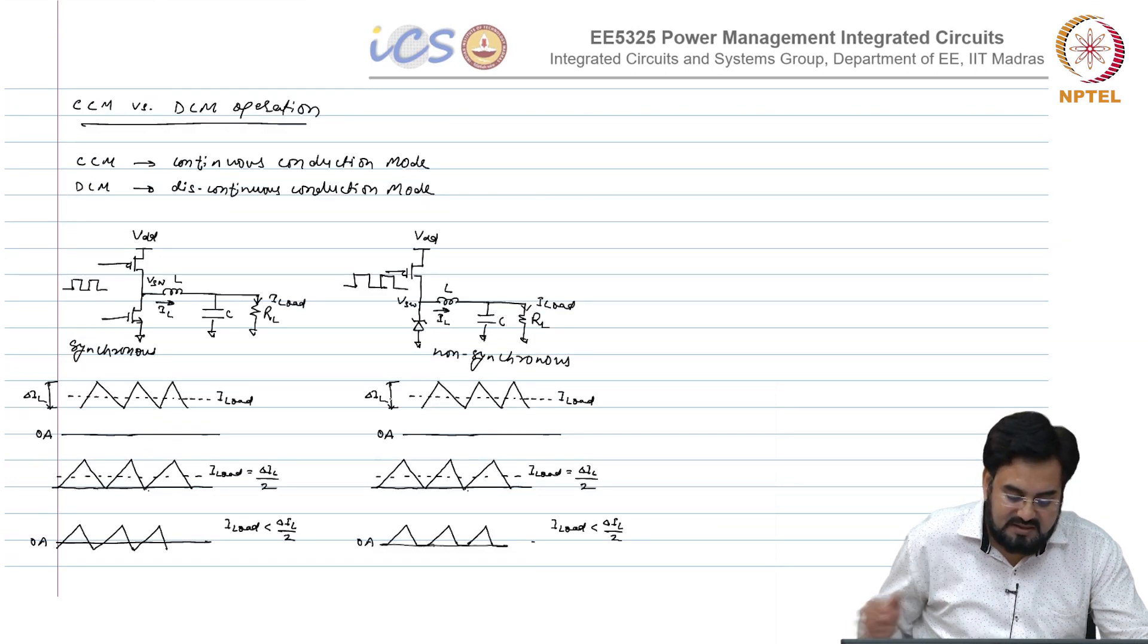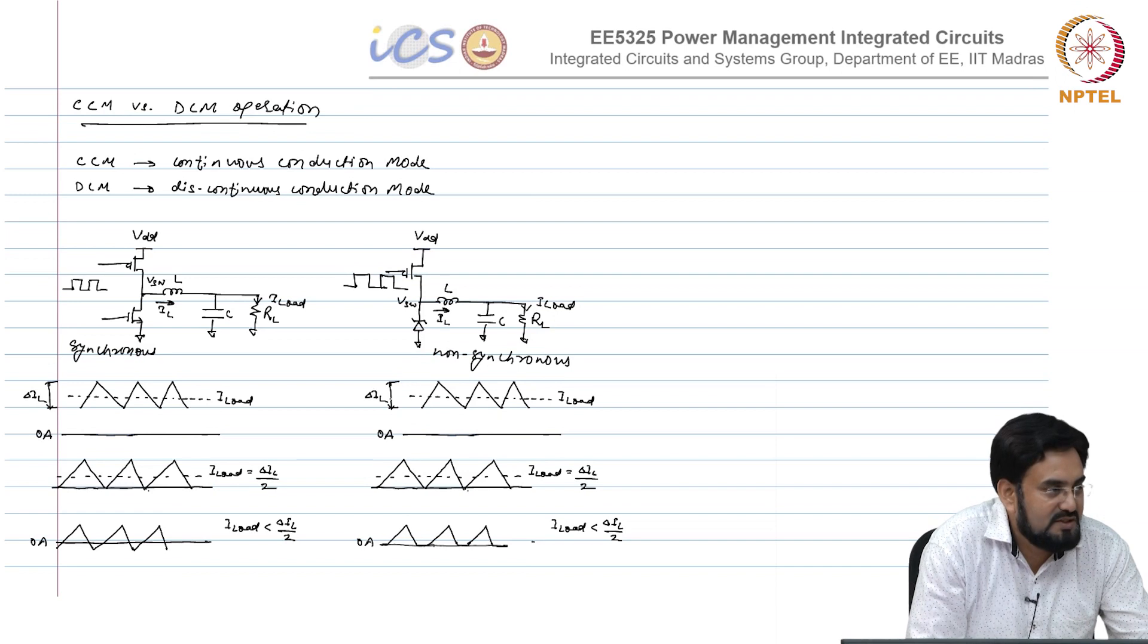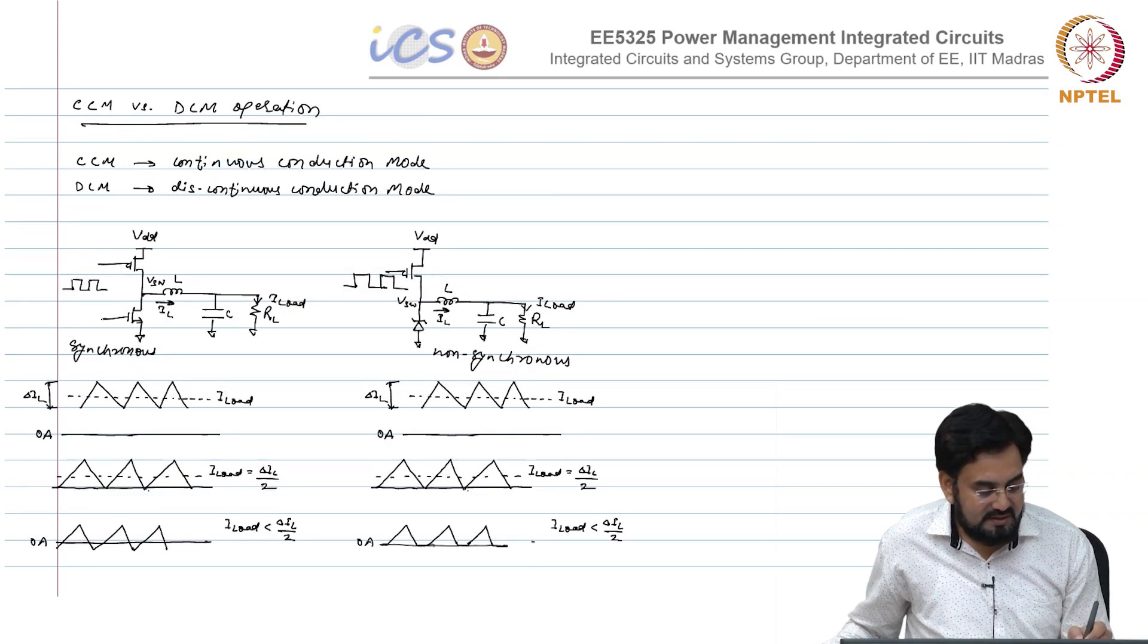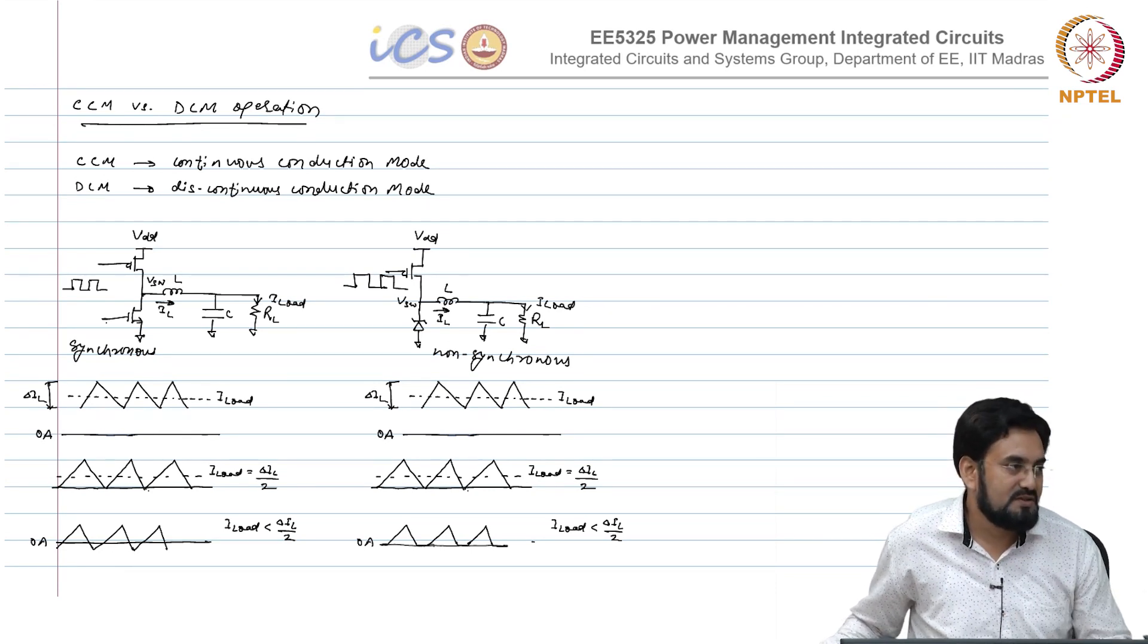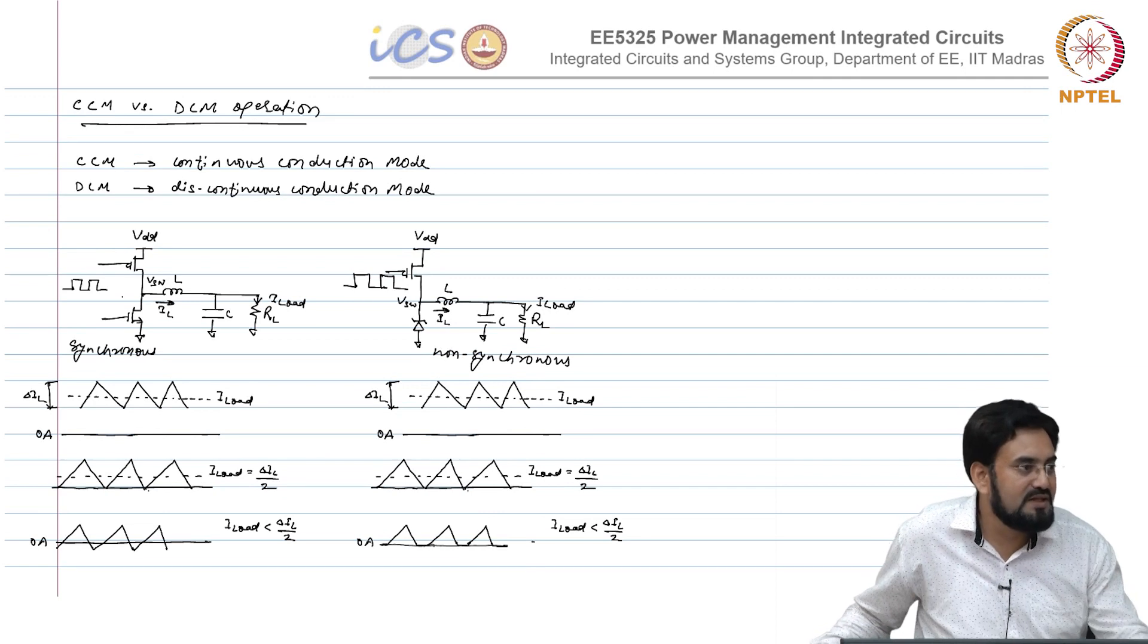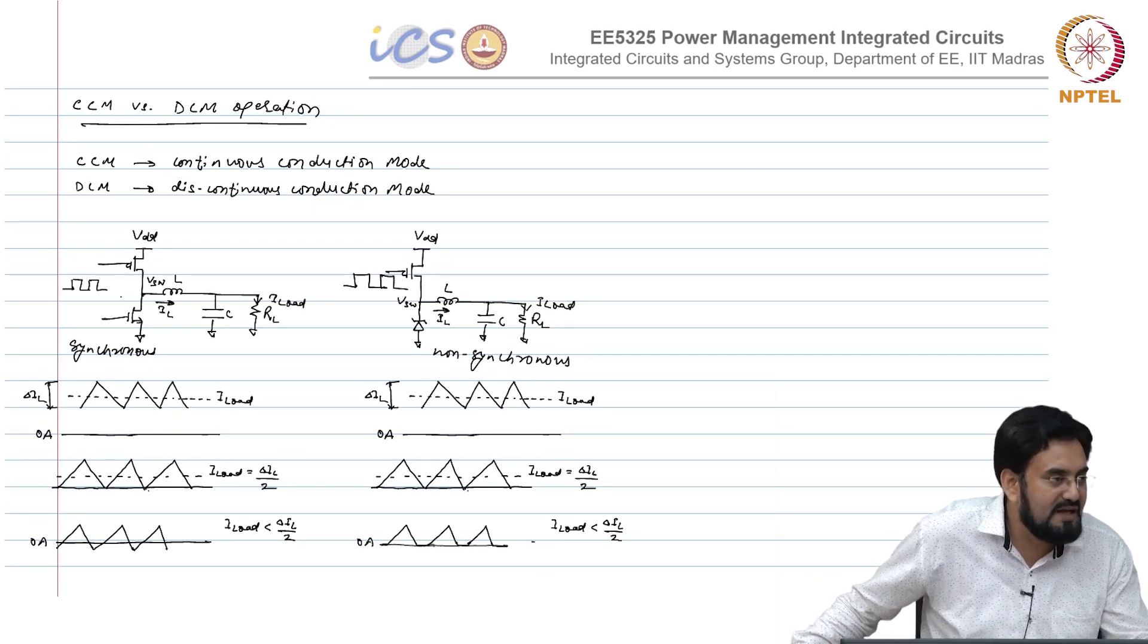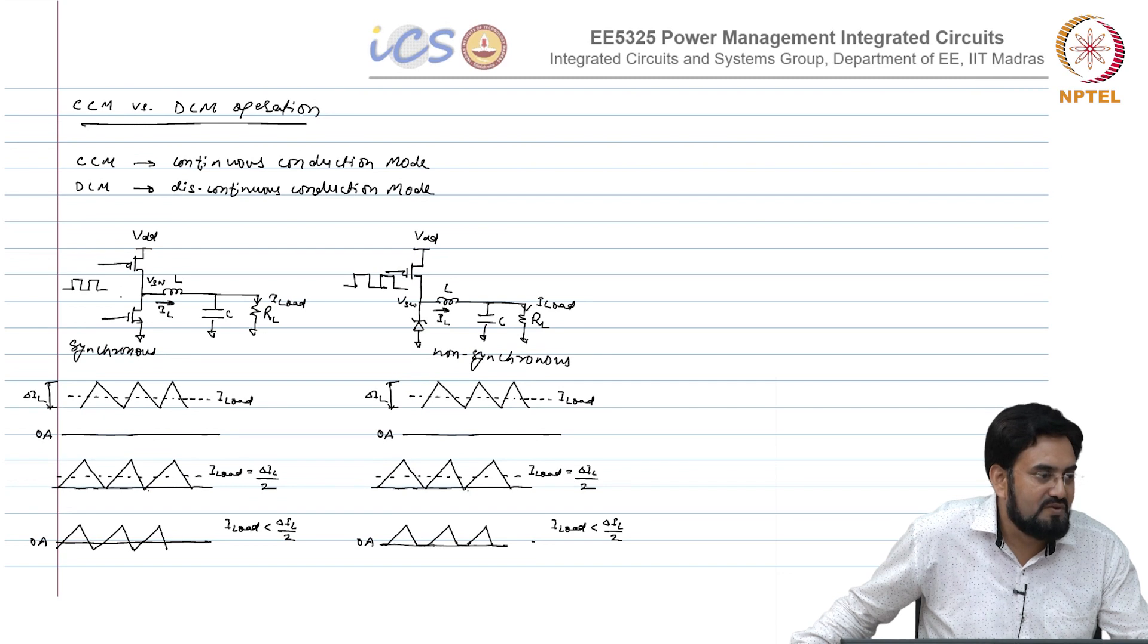If somehow I make this diode with a 0 forward voltage, then I am happy, then I would prefer this non-synchronous behavior rather than synchronous behavior. What we do actually? We implement some logic and when the current crosses 0 or goes below 0, you turn off the bottom switch. The moment you turn off the bottom switch, it will behave like a diode because it will not allow the reverse current, which means you are able to implement an ideal diode with this switch with some extra logic. That will behave like a diode with a 0 forward voltage.